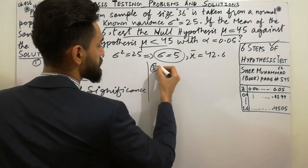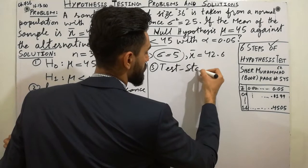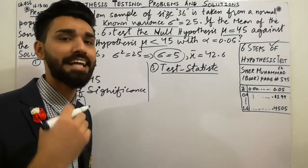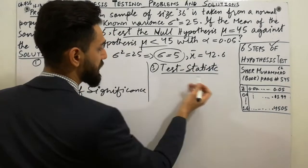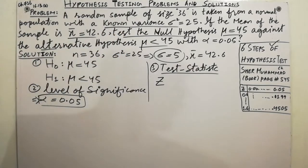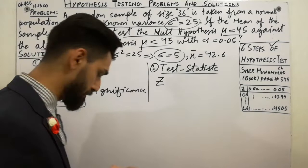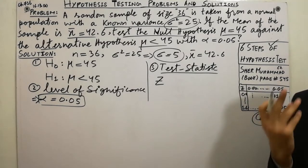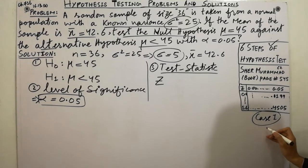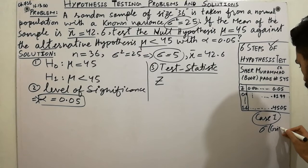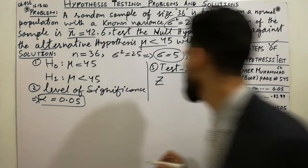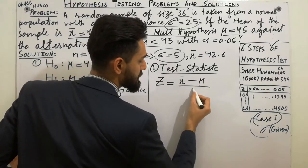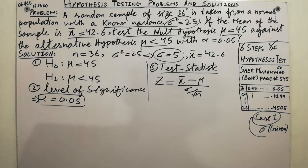Step three: the test statistic. The formula we use depends on whether we use the normal distribution (z) or t distribution. Because sigma is already given, this is Case 1. The formula is: z = (x-bar minus mu) divided by (sigma divided by square root of n).